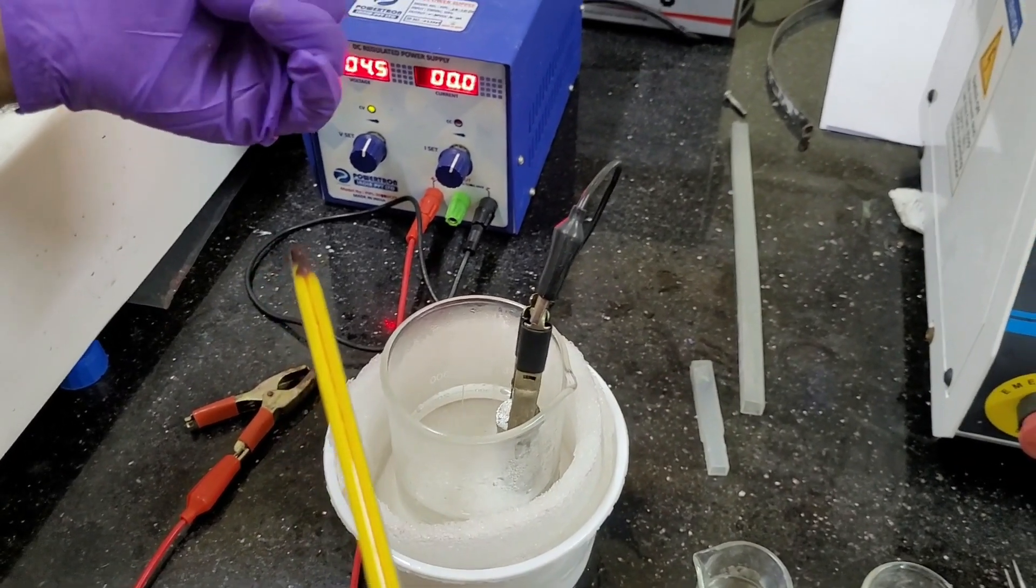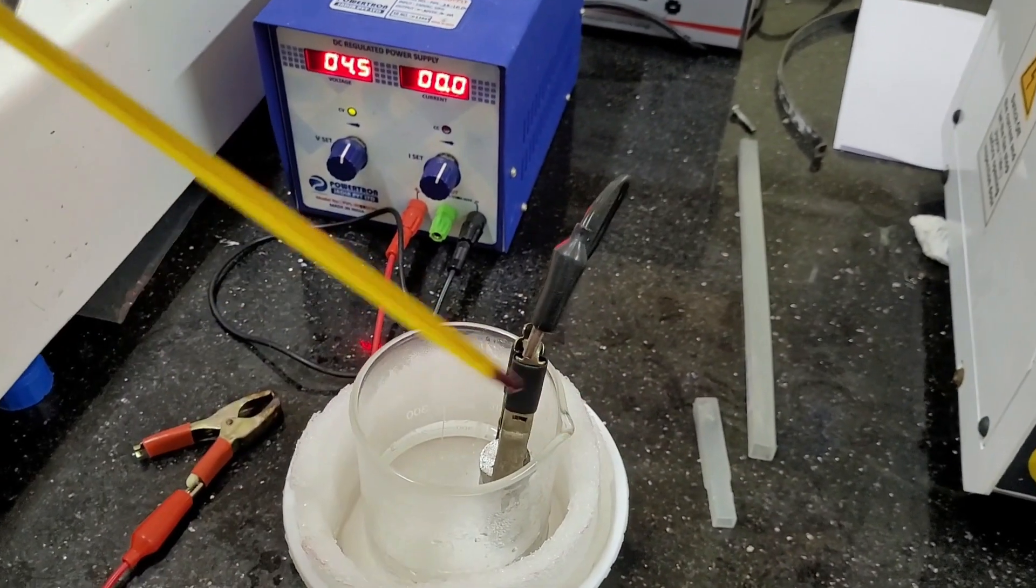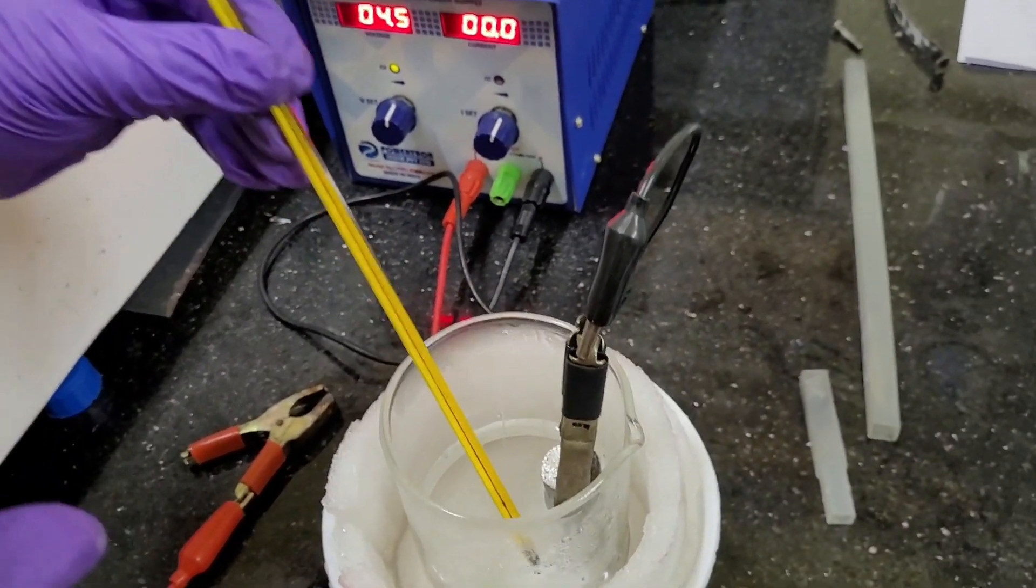Temperature is like minus 30 degrees centigrade or minus 20 degrees centigrade. So, this specific kind of thermometer we need to use. And in this way, we can measure the temperature.